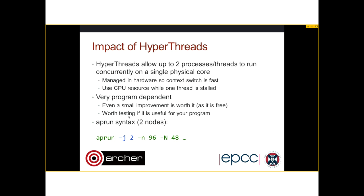In some cases you can see a speedup because hyperthreading hides memory latency and uses the core more efficiently. On the plus side, if you see any improvement — even 3-5% — you may as well use it because it's free: Archer is charged by the node. All you need to do is request nodes in the same way using the select option in your job script, then add the minus J2 option to APrun. That allows you to select up to 48 cores per node — for example, 48 cores across two nodes gives 96 processes total.